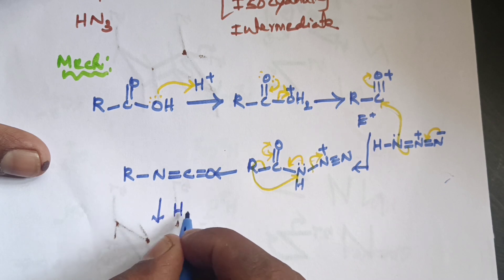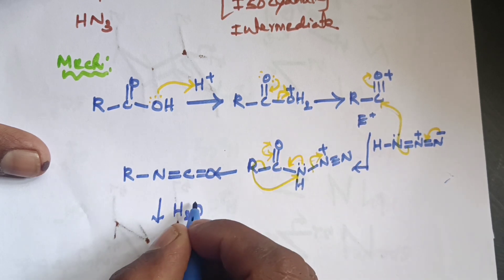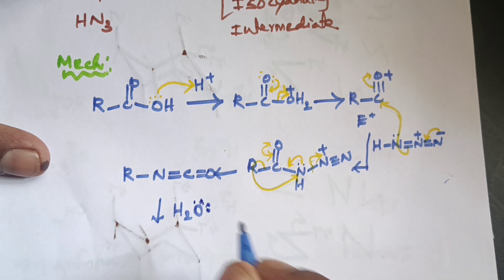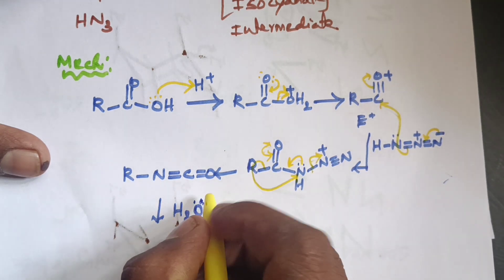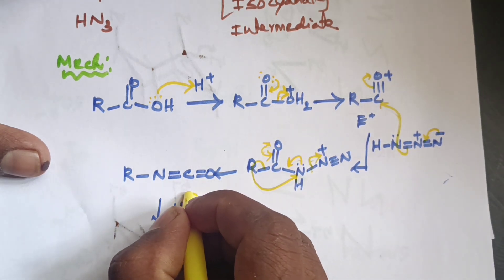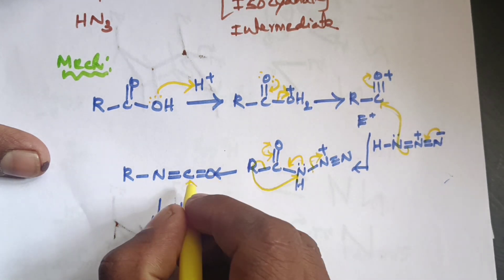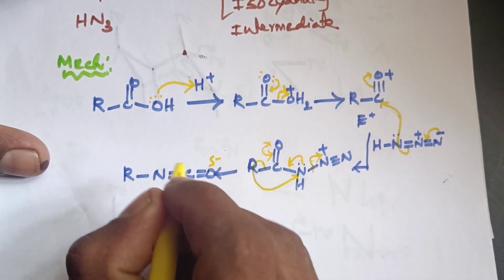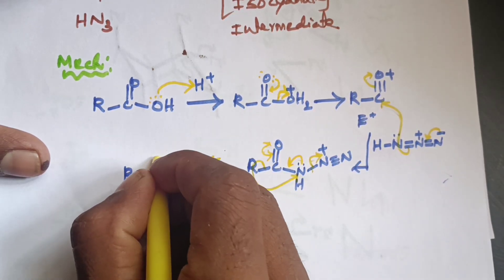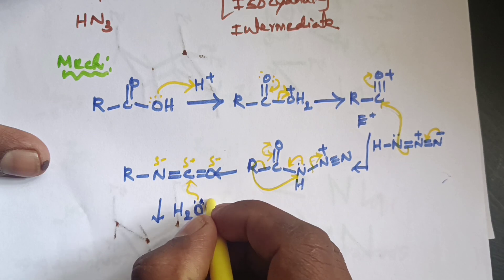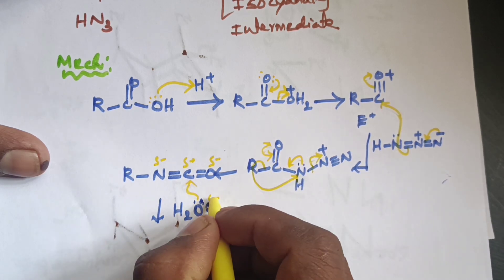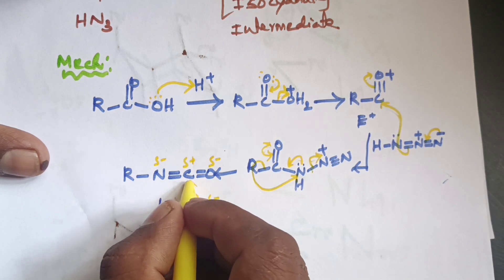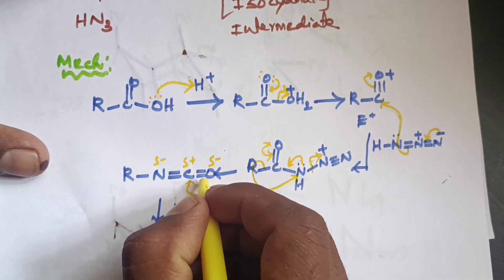Next step: water attacks. The oxygen of water has a lone pair, and this lone pair attacks the electrophilic carbon of the isocyanate. This carbon has a partial positive charge (δ+) and the nitrogen has a partial negative charge (δ−). The lone pair attacks the electrophilic center.